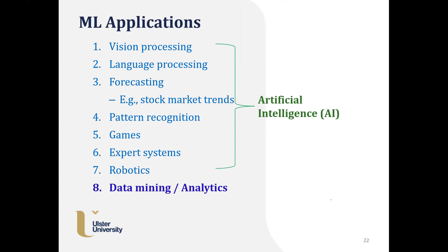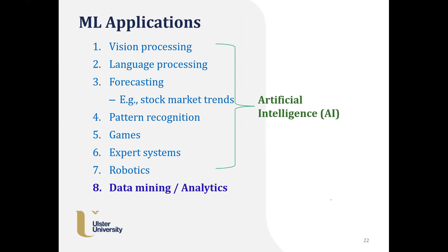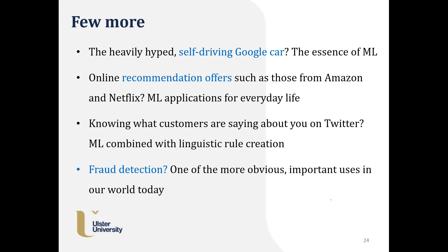Most common AI and ML applications are in vision processing, language processing, forecasting, pattern recognition, games, expert systems, and robotics. Common examples include web search on Google — there are ML software running in the background trying to predict your history patterns — Facebook photo identification, spam filtering, and Amazon's recommender engine, which learns your pattern and shows connected products based on your search history.